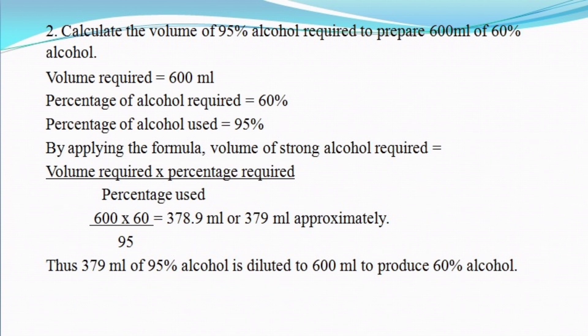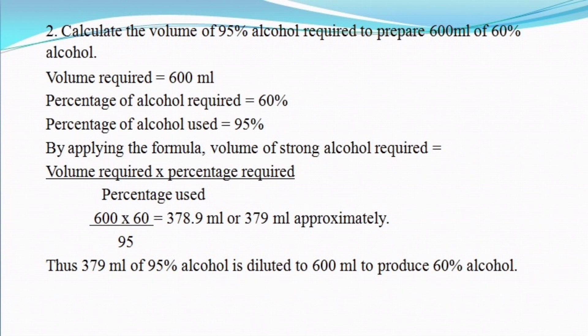Let's look at another problem. Calculate the volume of 95% alcohol required to prepare 600 ml of 60% alcohol. Volume required is 600, percentage required is 60, divided by 95. The answer is 378.9 ml of 95% alcohol. Add water to make up the balance to 600 ml.